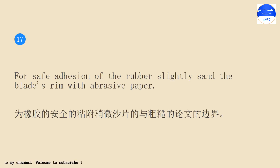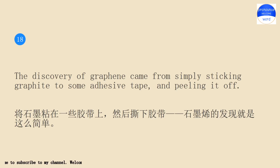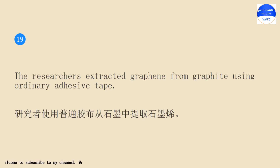The discovery of graphene came from simply sticking graphite to some adhesive tape and peeling it off. The researchers extracted graphene from graphite using ordinary adhesive tape.